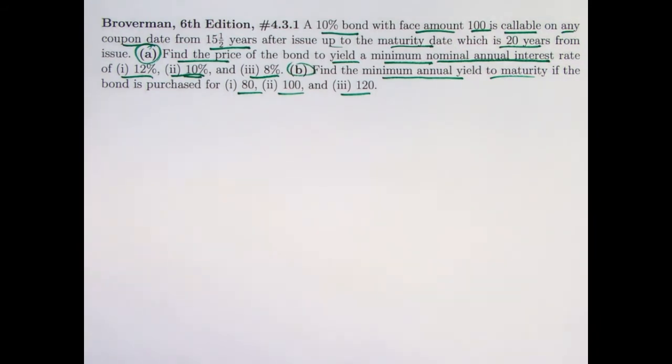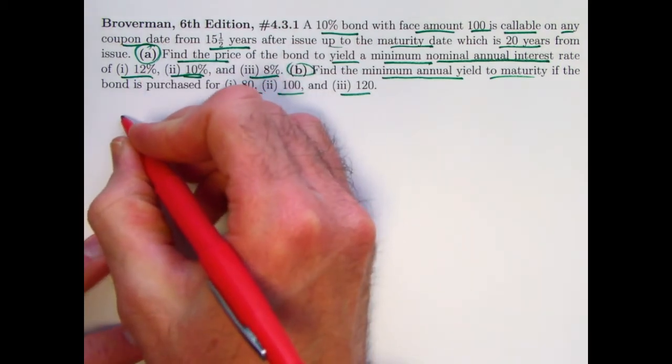Before just going ahead and using formulas and using our calculator, and by the way, in part B, we will need to use the financial functions. Before doing that, think clearly. Stop. Say, this is a problem about callable bonds. I need to think clearly about concepts here.